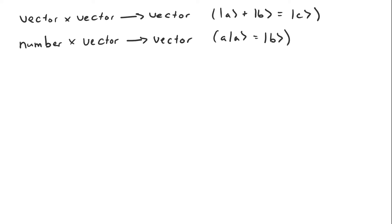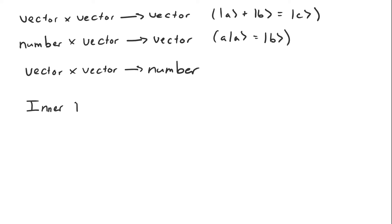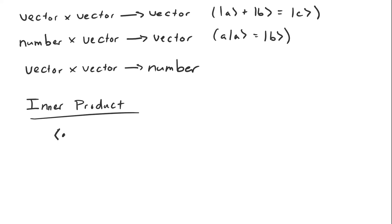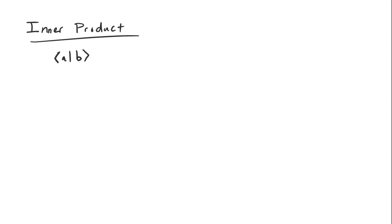In this video I want to talk about a new operation that takes two vectors and produces a number. This is called the inner product, and the inner product of two vectors a and b is denoted like this — we use the same notation as usual for the vector b, and then we flip the a around and sandwich it up against the b.